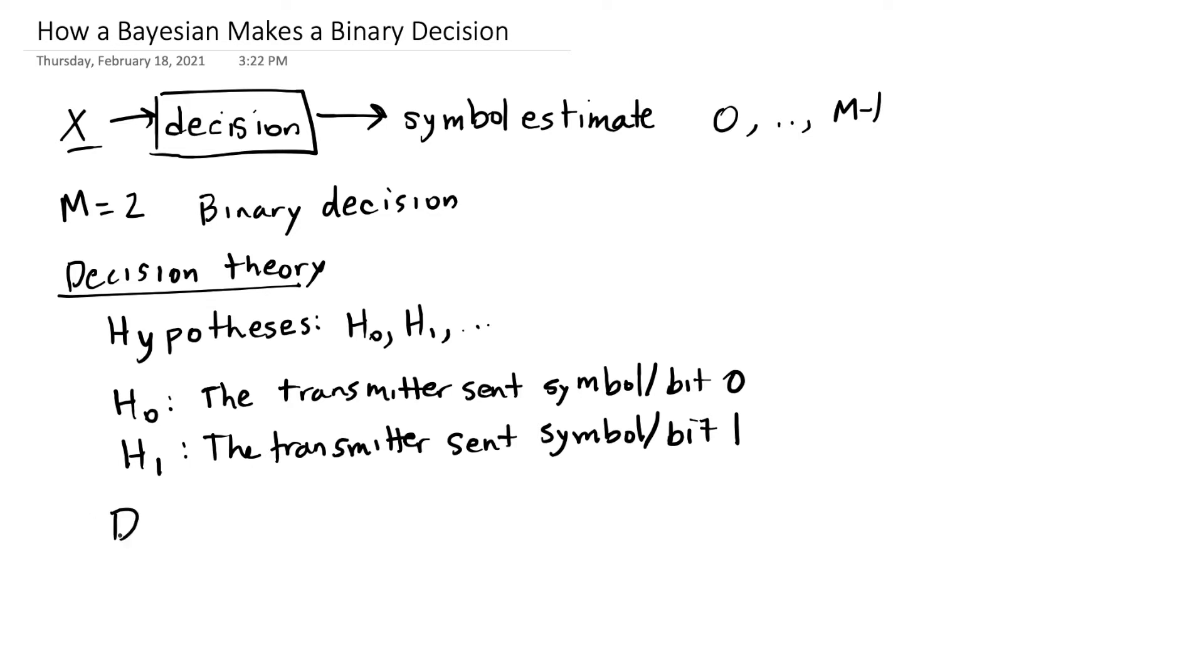Our job at the receiver then is going to be decide which one of these two hypotheses are true. And we're going to have what we call a decision region, R0 is the region of X for which we decide H0, and R1 is the region for which we decide H1.